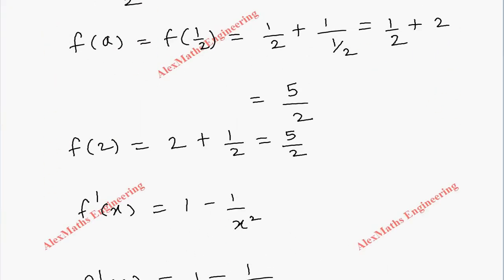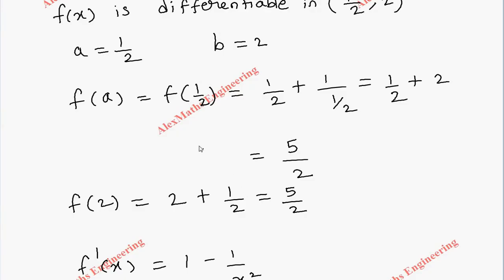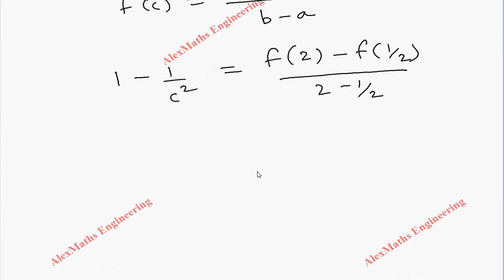Here we find f(2) is 5/2 and f(1/2) is also 5/2. So by replacing both values, we get the numerator as 0: 5/2 - 5/2. The denominator, after taking LCM, is 3/2. Anyway, the numerator is 0, so the value is 0.